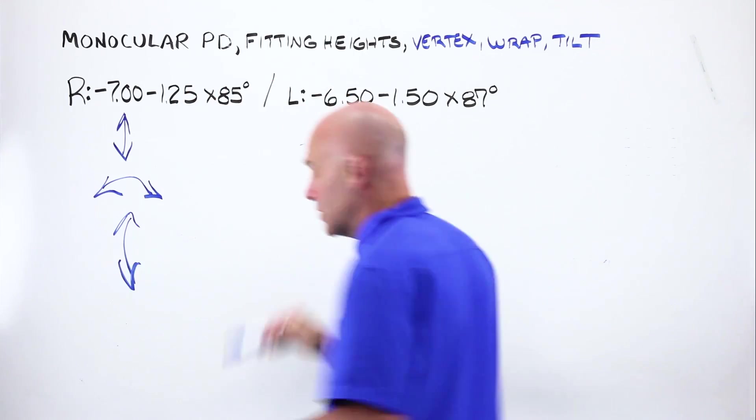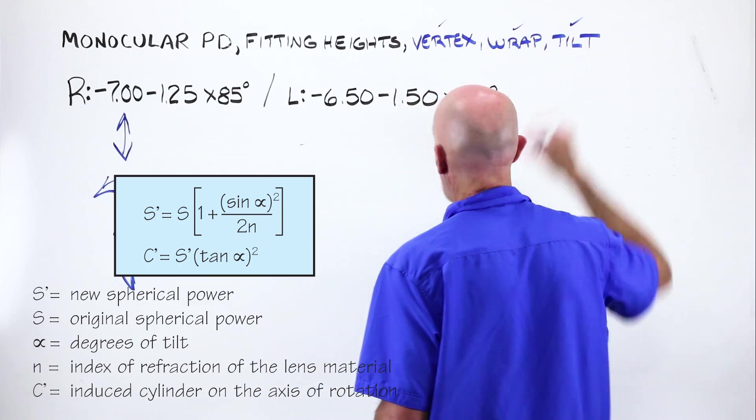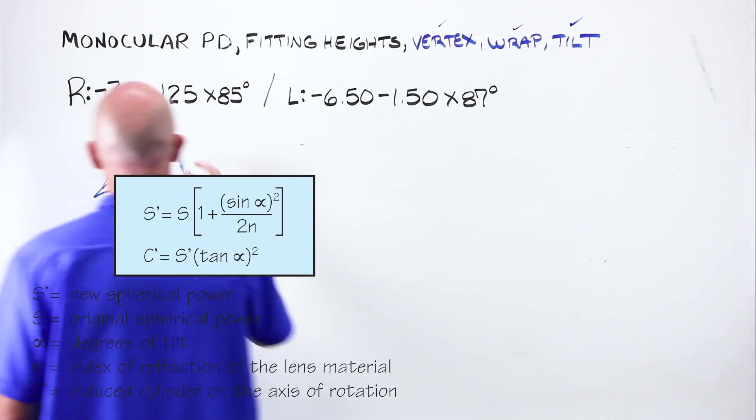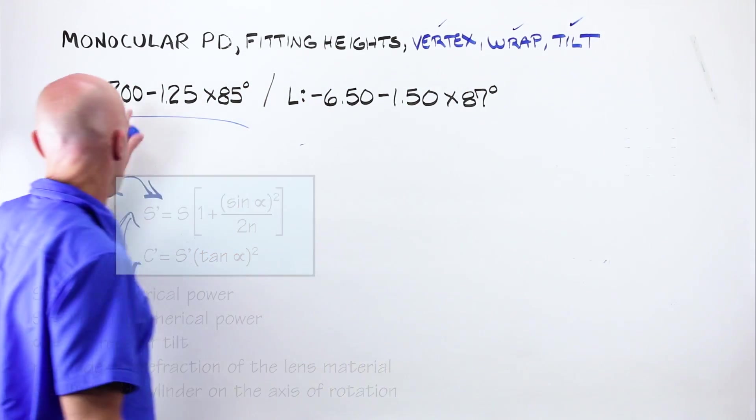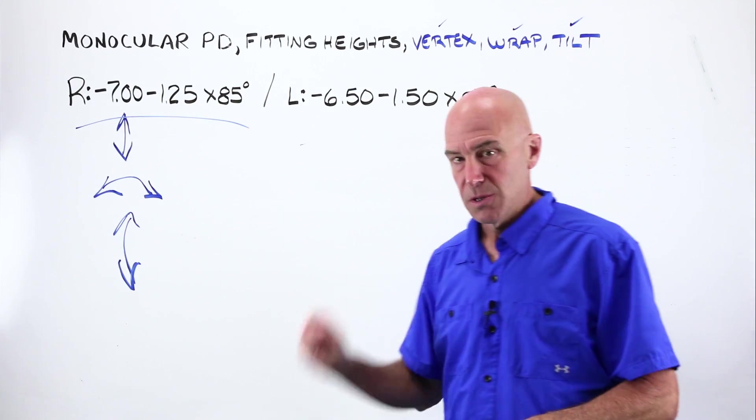So the computer jumps in, takes over, accounts for vertex depth, accounts for wrap, accounts for tilt, and builds this lens instead of being minus seven, minus 125 at 85 to the numbers that you see.